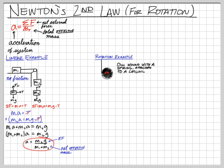We can demonstrate that later. The disc is wound with a string attached to the ceiling. Just like before, we draw a free body diagram and find the acceleration of the disc as it falls. Before we start, we need to know the mass is M, and since it's a disc, the moment of inertia is one-half MR squared — that's going to be important.